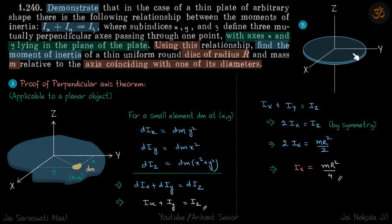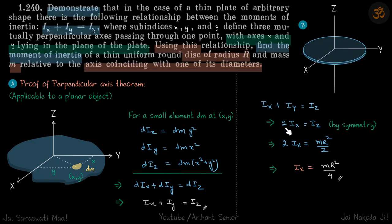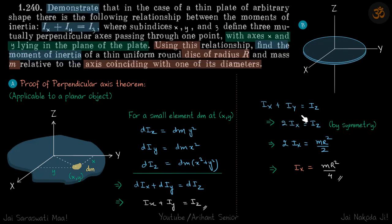The plane of the disc will lie in the xy plane, so Ix plus Iy equals Iz. By symmetry we can see that Ix will be same as Iy, so 2Ix equals Iz.